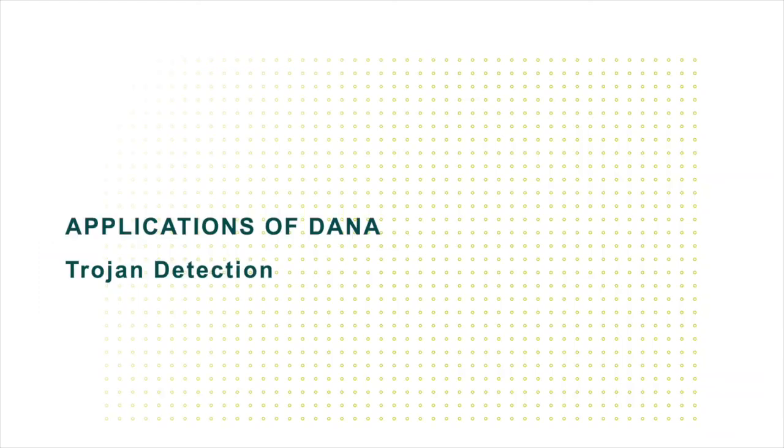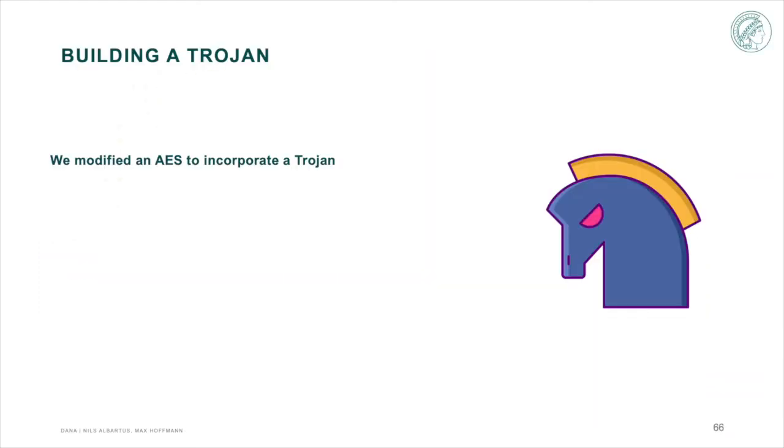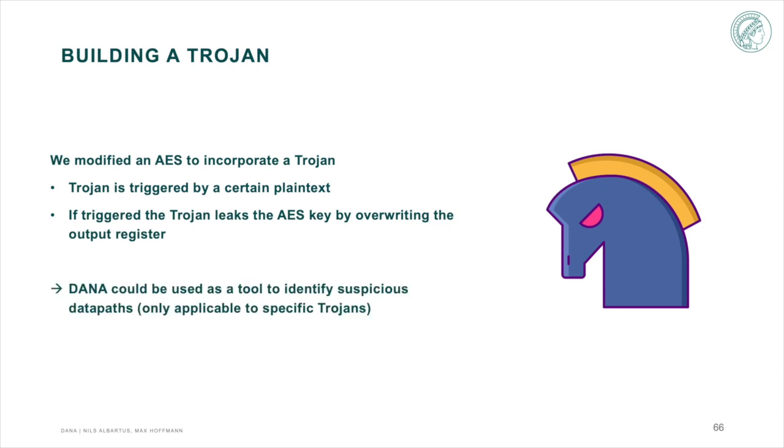Our second case study deals with the detection of Trojans. We modified an AES to incorporate a Trojan that is triggered by a certain plain text. If triggered, the Trojan leaks a key by overwriting the output register. DANA could be used to identify suspicious data paths but is limited to a very small subset of Trojans.